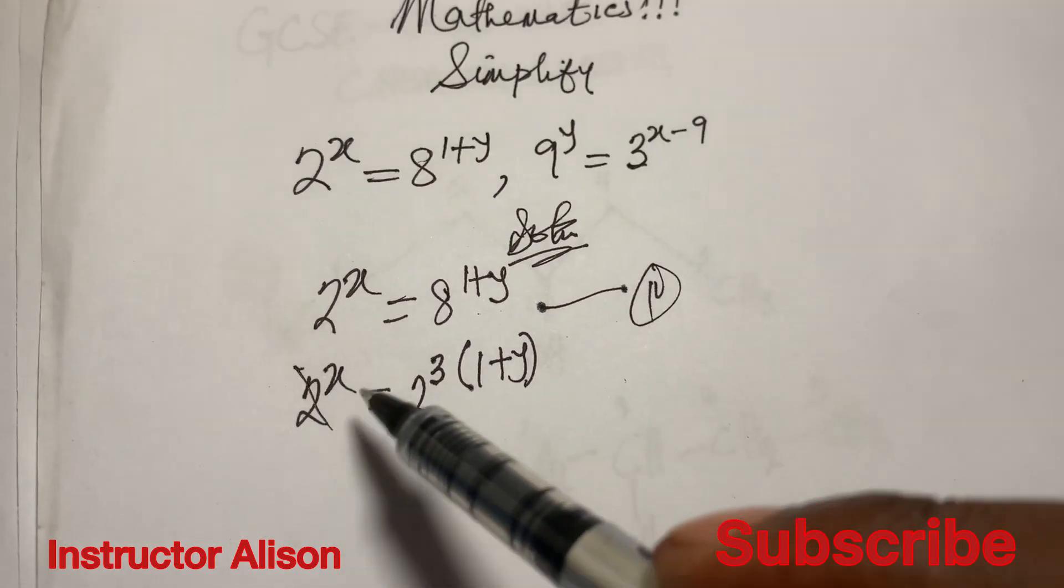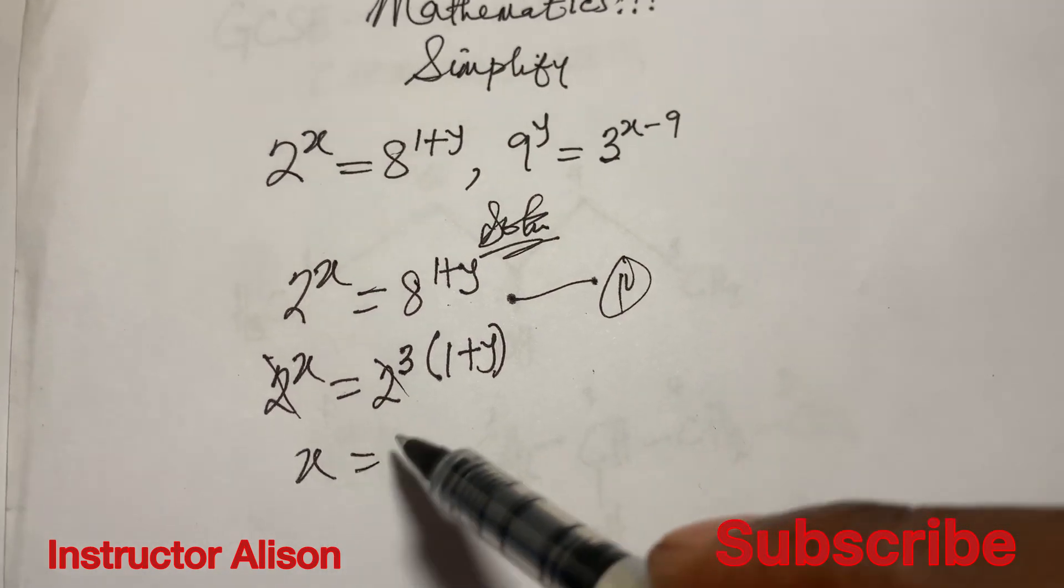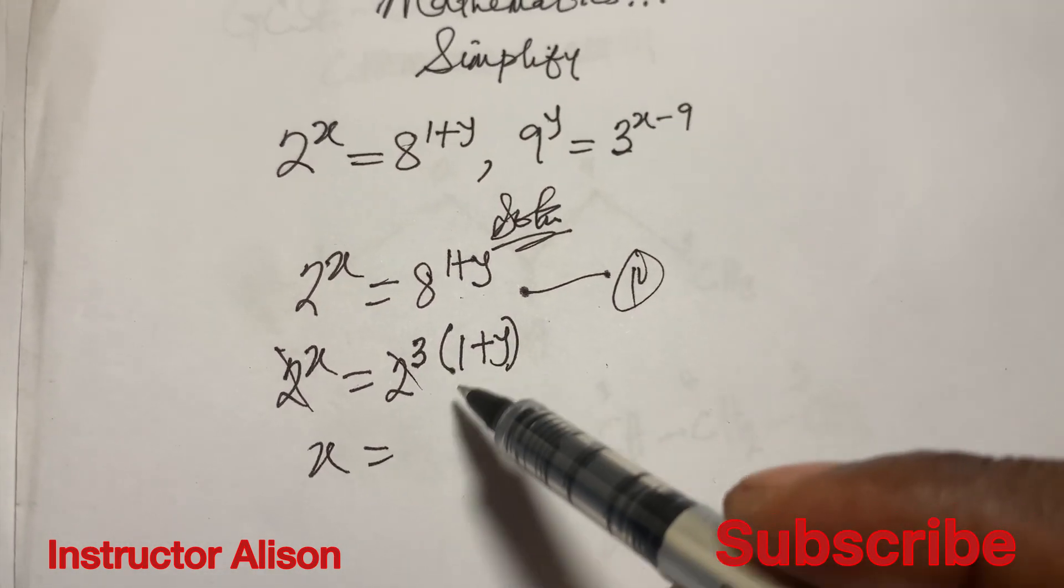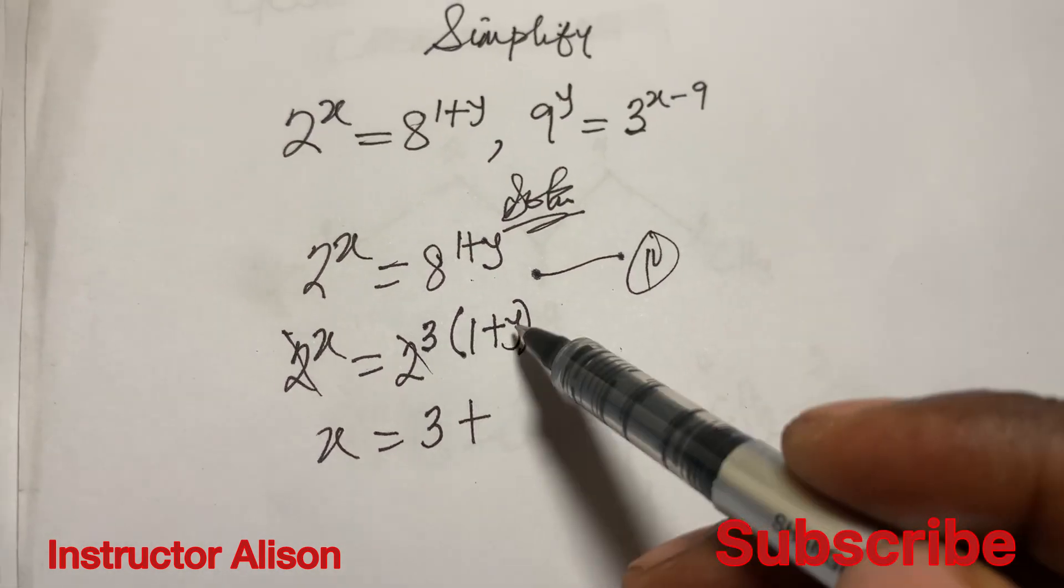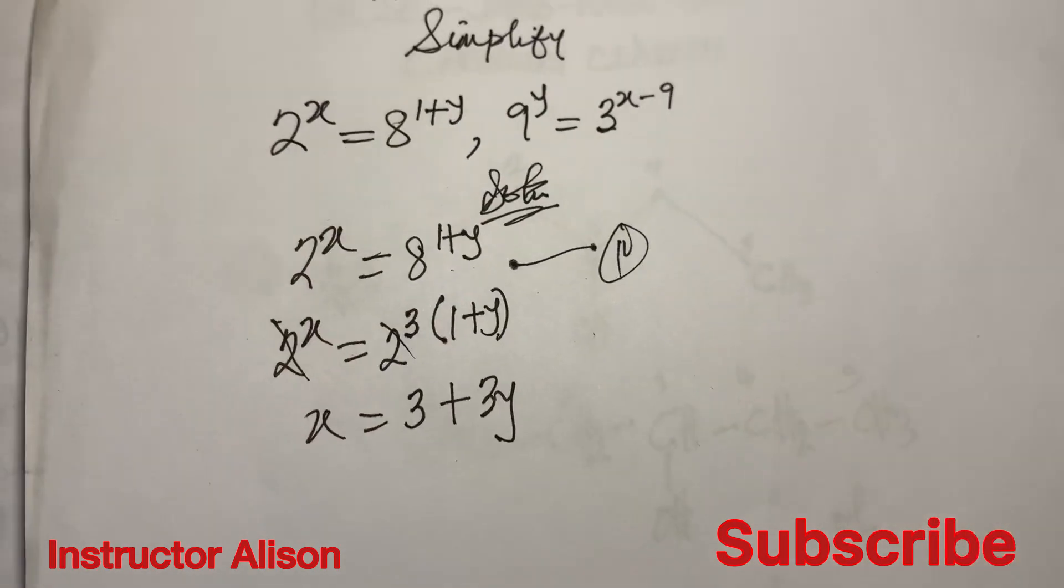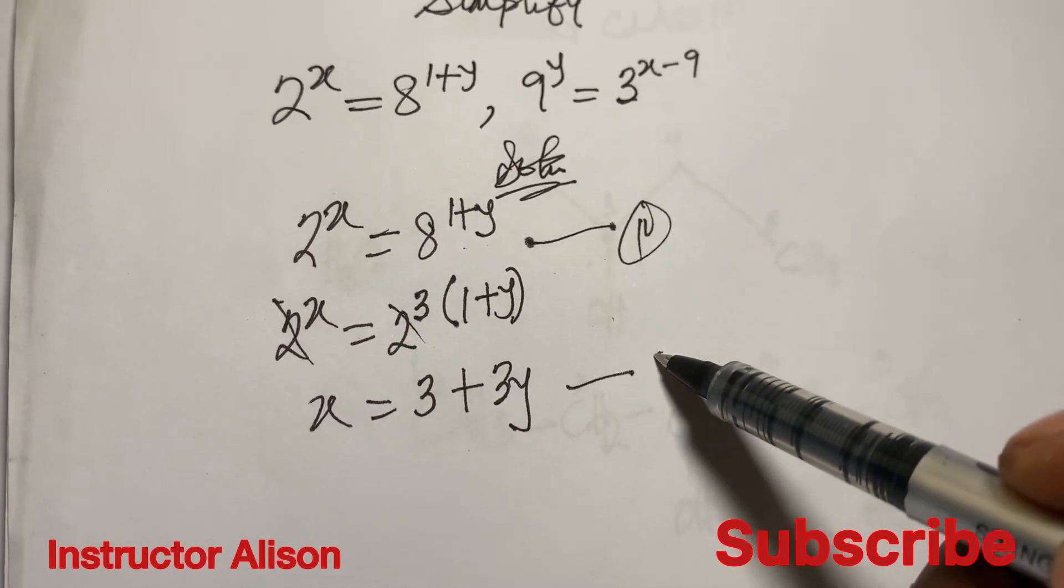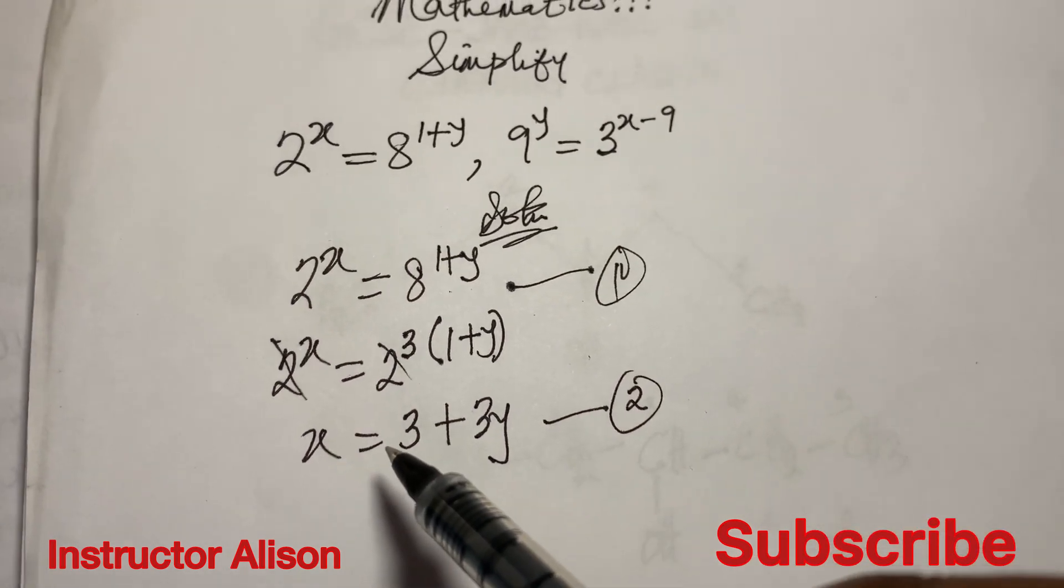So we have 1 plus y already as a power. What is the next thing? Because we notice that the bases are the same, you can cancel the bases and then you have the power to be x equal to 3, which we distribute.